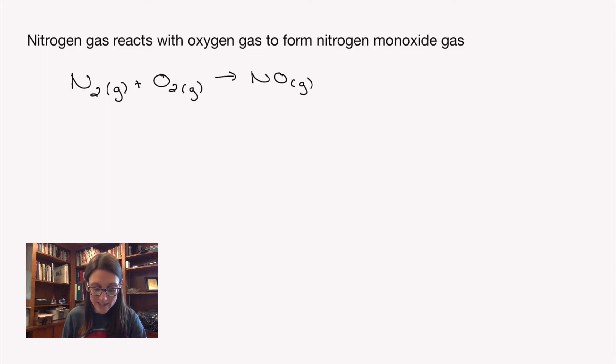So there's our unbalanced chemical equation making sure I've got the right formulas. At this point we're going to tally how many of each element we have. In this reaction we have nitrogen and oxygen. Right now I have two of each of those on the left side of the equation and only one of each on the right side.